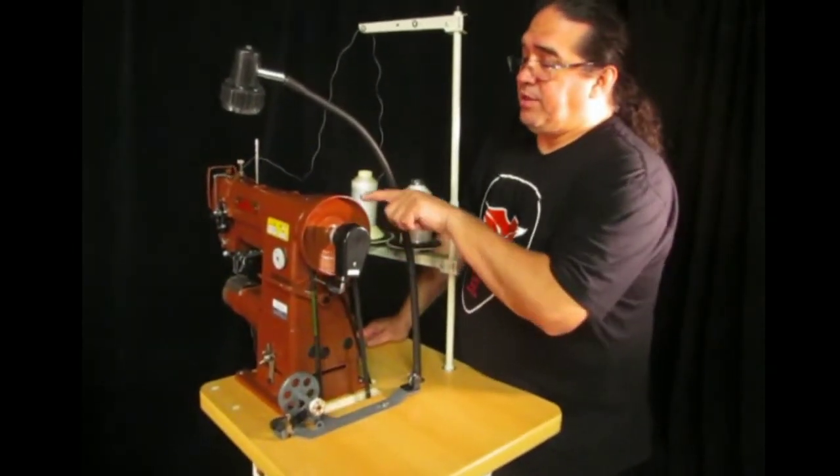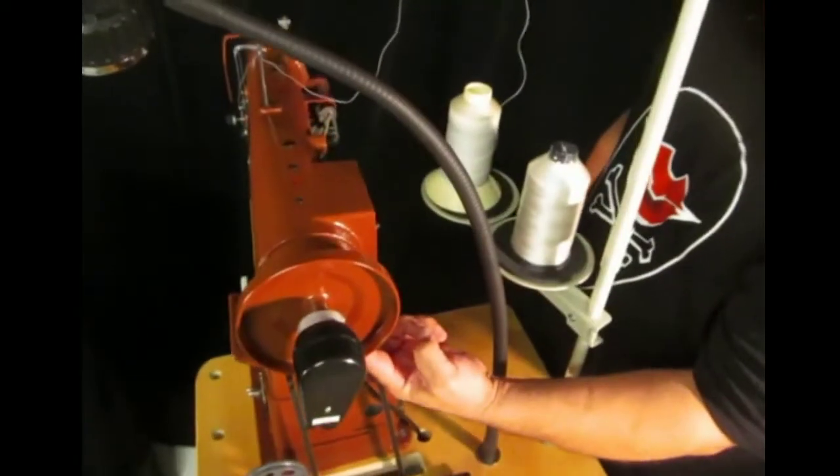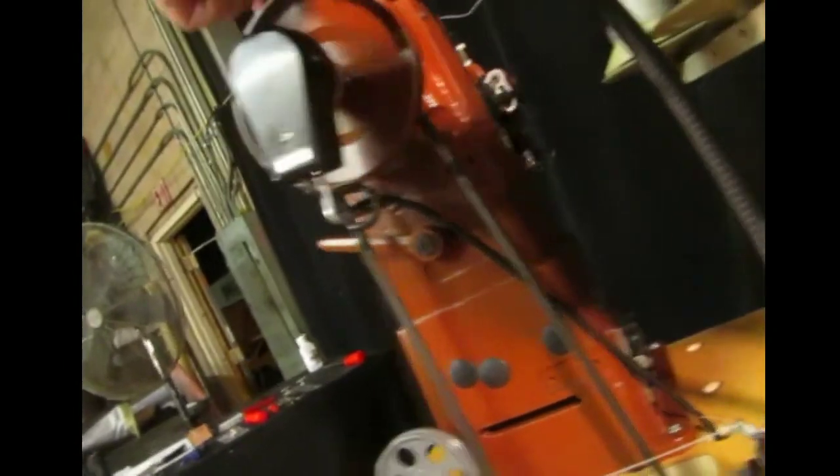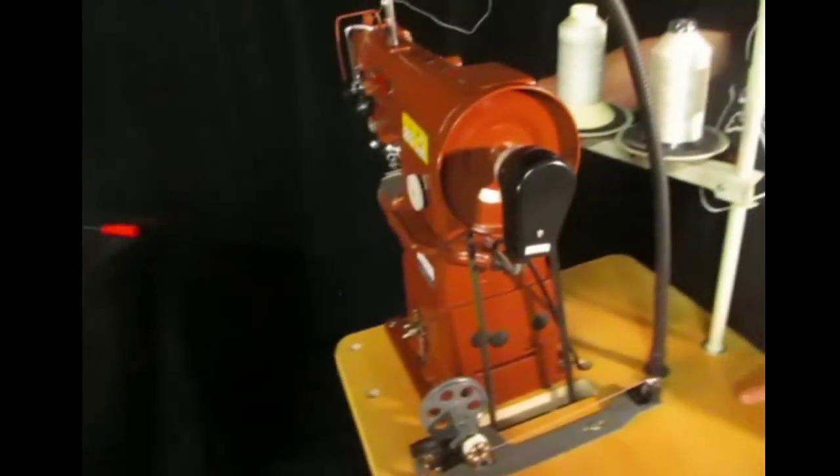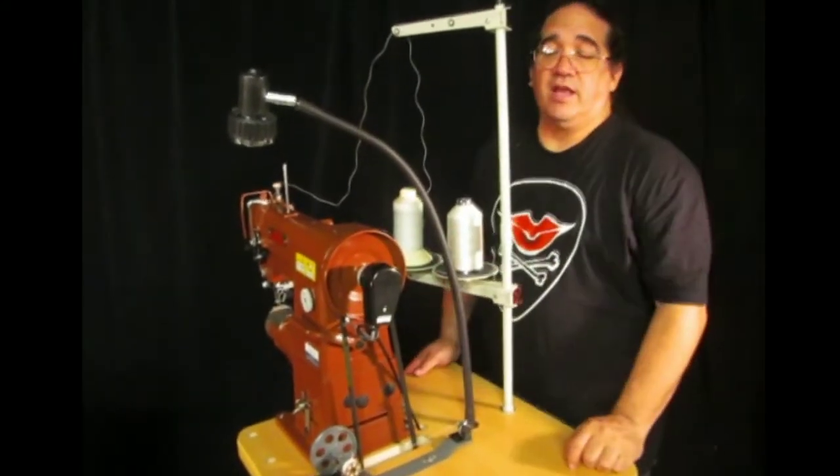There are two set screws inside the hand wheel located underneath the V-belt. And if the motor is spinning, the hand wheel is spinning, and the machine isn't going anywhere, then maybe there's a case where your set screws have come loose on the hand wheel.